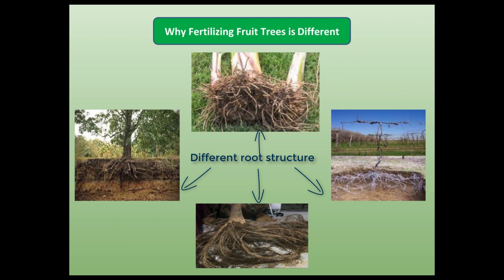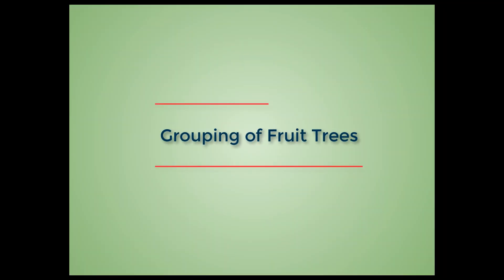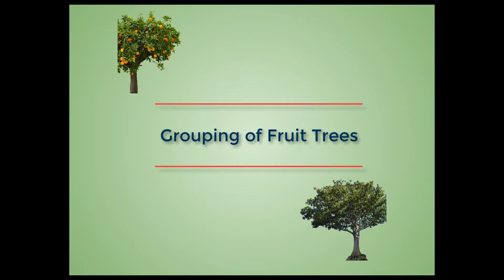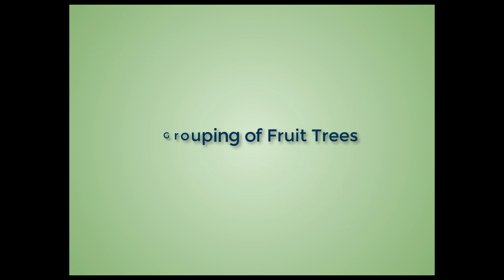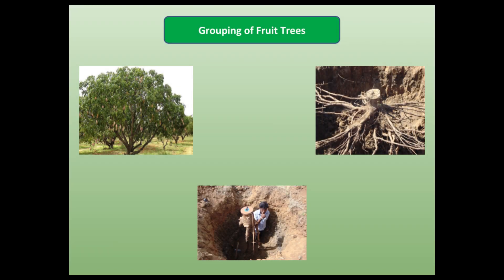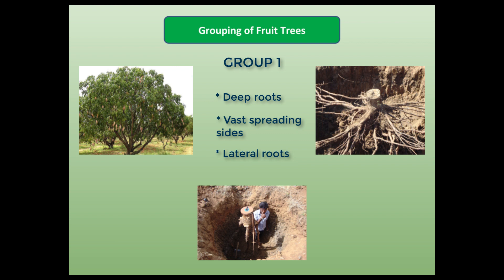In this video we will show you the exact location of the fruit tree mouth and how to feed fertilizers directly into it. As the location of the active roots or mouth for each variety of fruit tree differs, we are going to group these fruit trees based on their root structure. First, let us put all trees with very deep roots and very vast spreading lateral roots into Group 1 — which includes mango, lychee, chaat fruit, jamun, and tamarind.